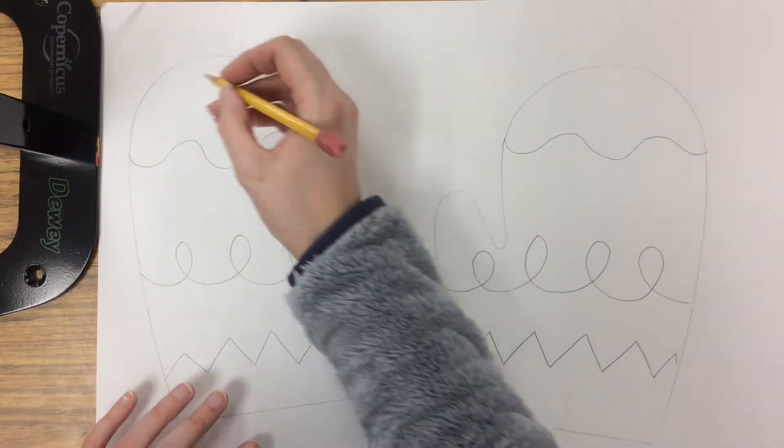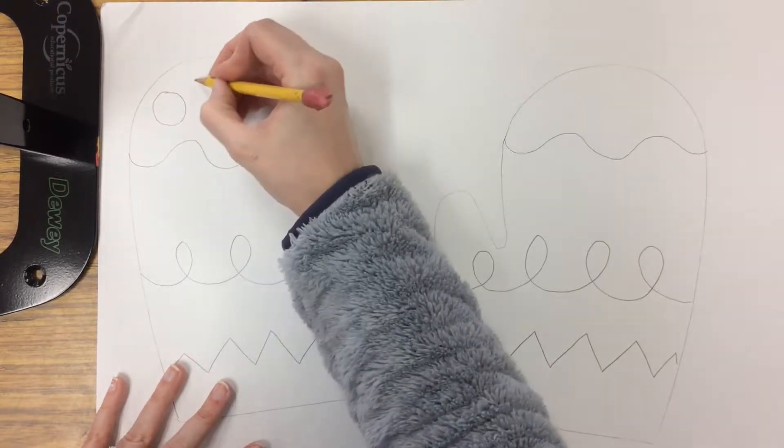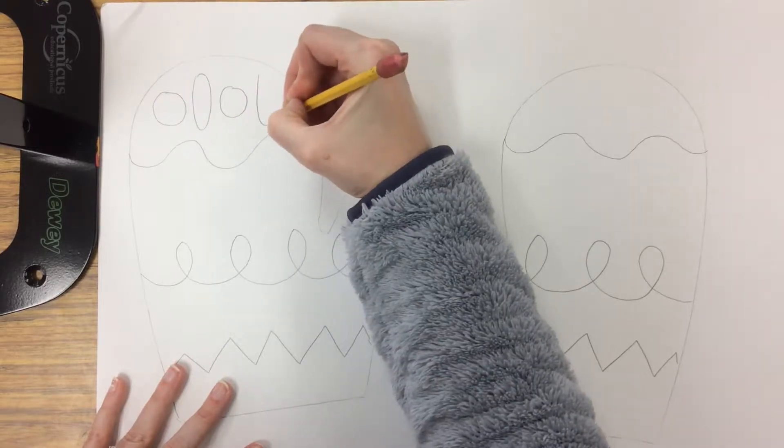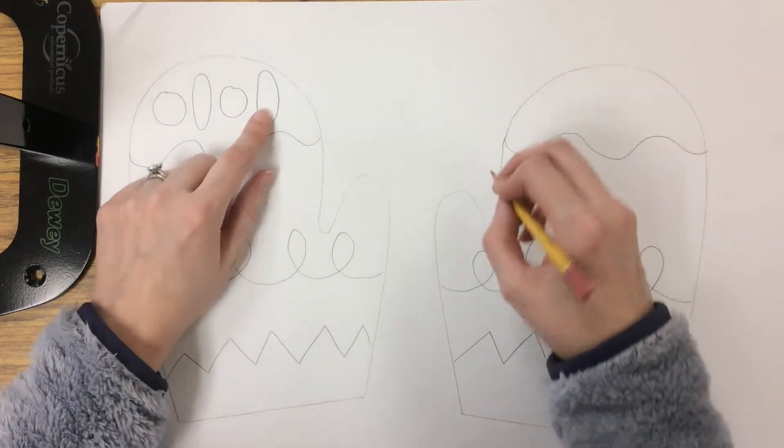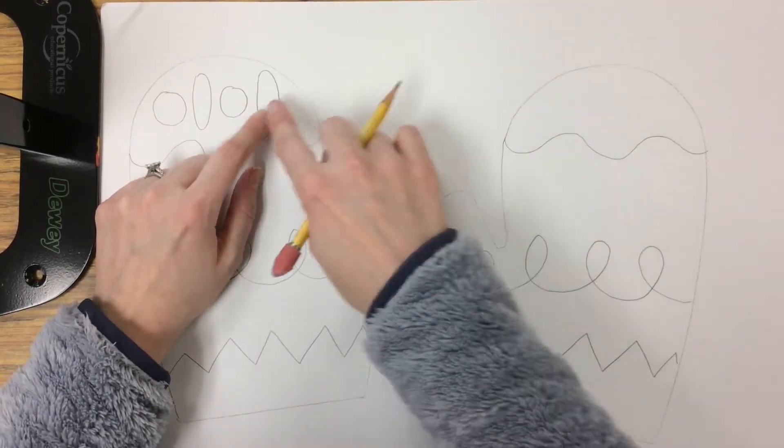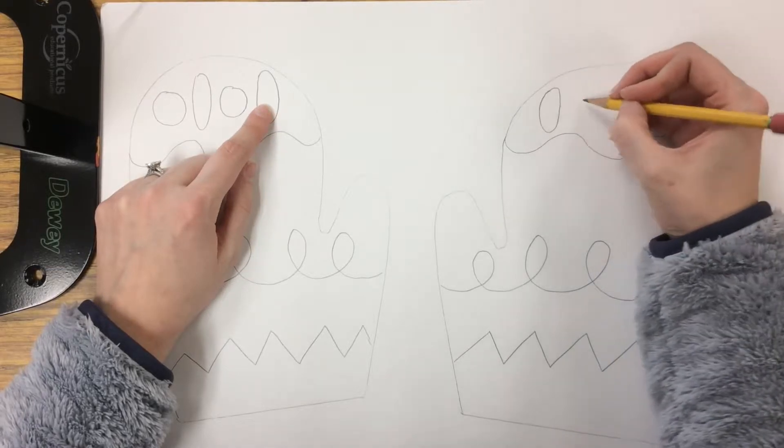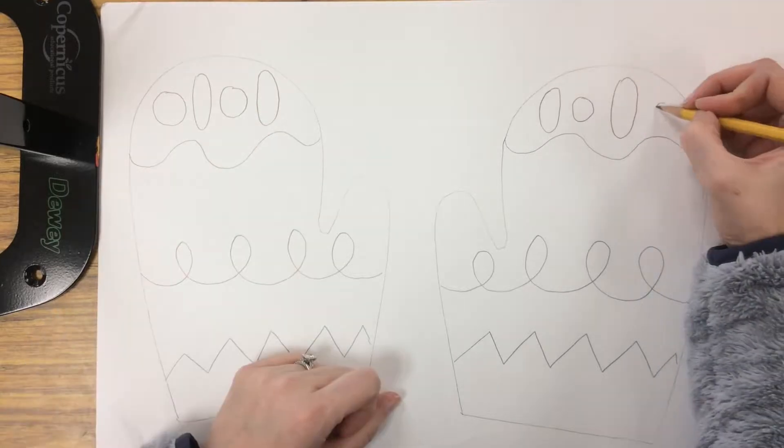I could do a pattern or I can just repeat the same shape. So maybe on the top, I will do a pattern. I'll do circle, oval, circle, oval. So on the right, again, I need to do the same thing. But I could do a reflection if I want. So instead of starting with circle, I could start with oval, which is facing the inside. So oval, circle, oval, circle.